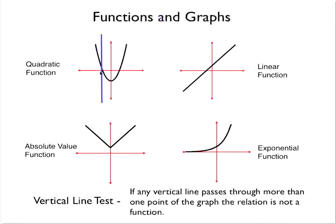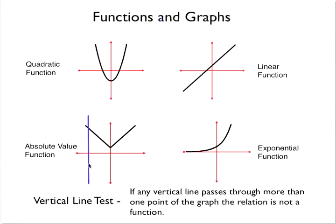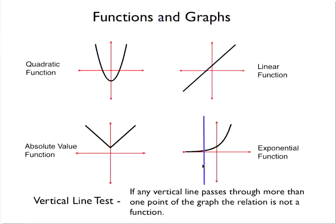As I pass this vertical line through each of my graphs, this vertical line can only hit my graph at one particular point. You can see the vertical line is only passing through one point at a time on the quadratic function graph. The same is true for the linear function — it only touches at one spot. Similarly, with the absolute value, it only touches at one spot anywhere on the graph. And with the exponential function, it would only touch at one spot on that graph.